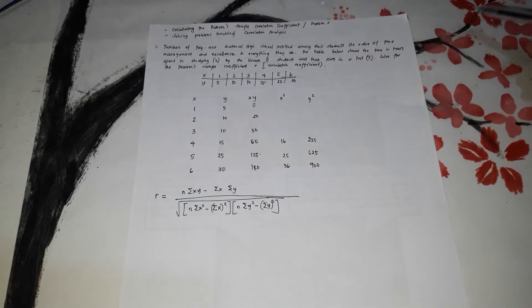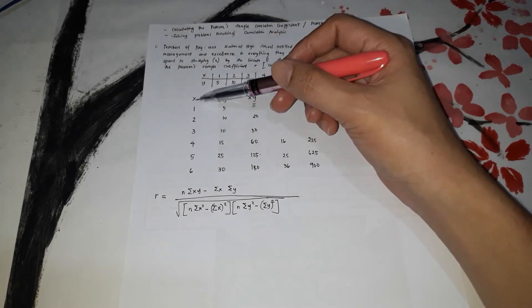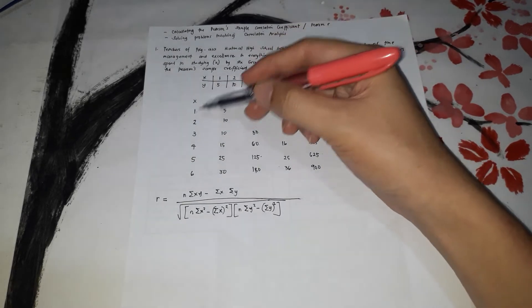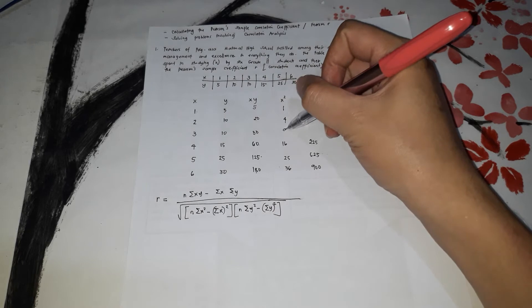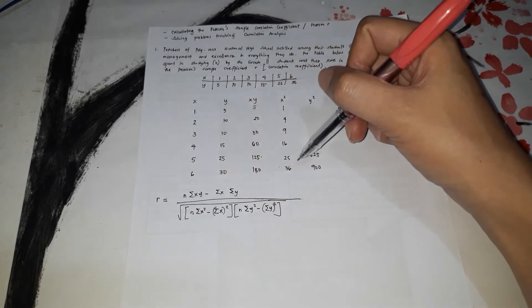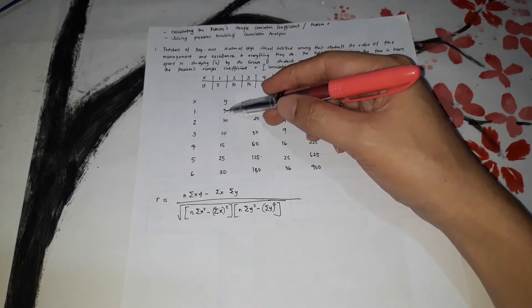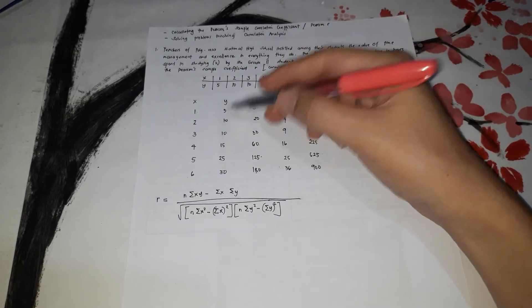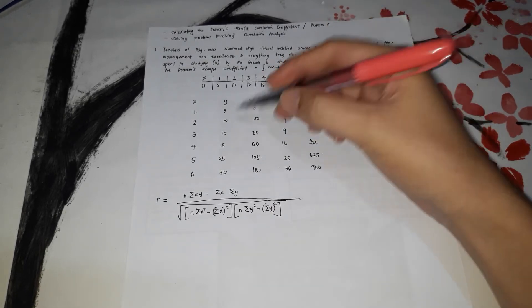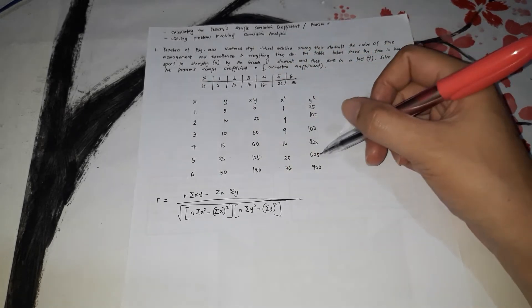I solved this already so the video will not be very long. Next, X squared — you multiply X by itself. So: 1×1=1, 2×2=4, 3×3=9, 4×4=16, 5×5=25, 6×6=36. For Y squared, Y times Y: 5×5=25, 10×10=100, 10×10=100, 15×15=225, 25×25=625, and 30×30=900.